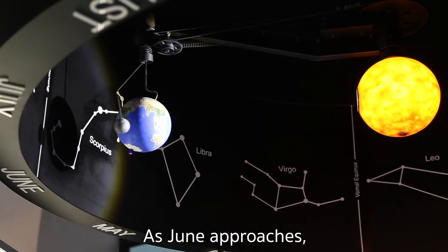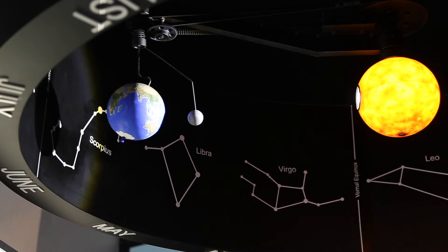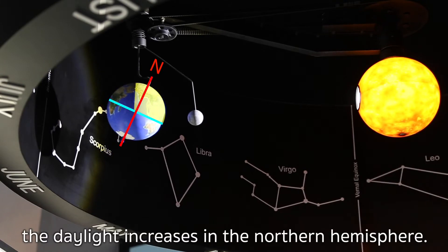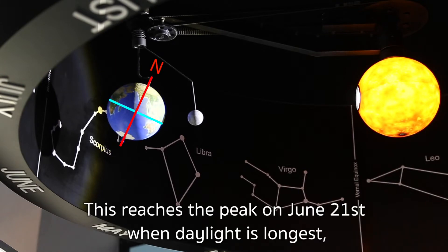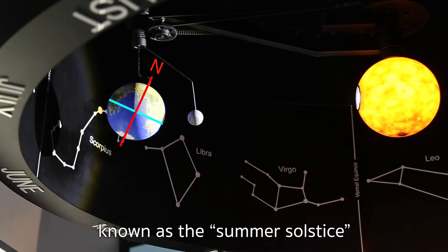As June approaches, the daylight increases in the Northern Hemisphere. This reaches the peak on June 21st when daylight is longest, known as the Summer Solstice.